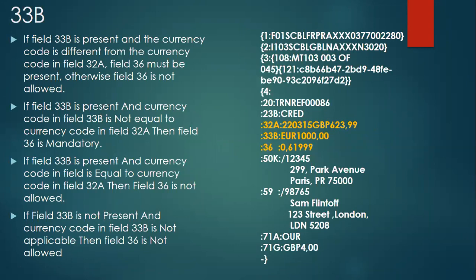Field 33B in MT103 is called the instructed amount, and there are network validations that happen over the 33B field. If the message doesn't meet the validation criteria it will NACK, throwing an error message. In the NACK message, field 451 will carry the value 1, and field 455 will carry the error code D75.